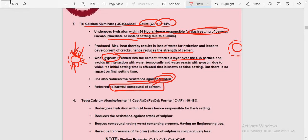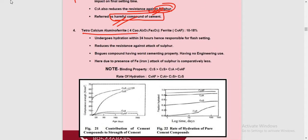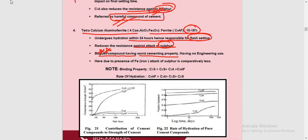C3A also reduces resistance against sulfate attack, and is therefore considered a harmful ingredient of cement. The fourth compound is Tetracalcium Aluminoferrite, represented as C4AF, comprising 10 to 18%. It also undergoes hydration within 24 hours and is responsible for flash setting. It reduces resistance against sulfate attack. C4AF has the worst cementing property — this is a frequently asked exam question. It has no engineering use; however, due to the presence of iron, the sulfate attack is comparatively less.